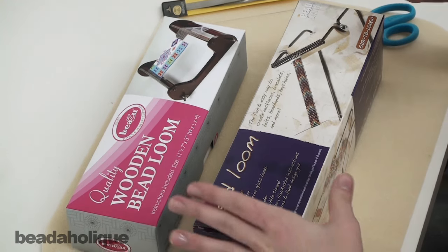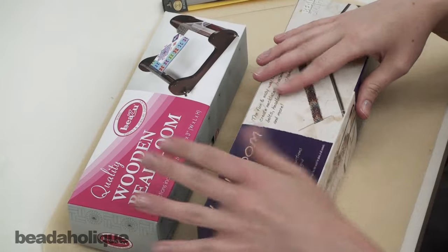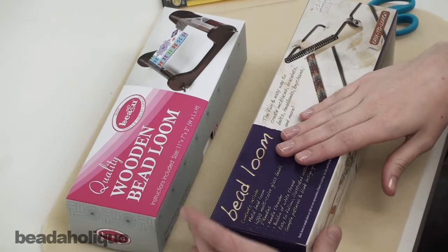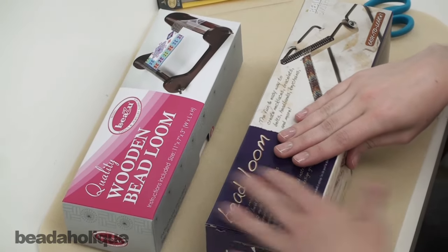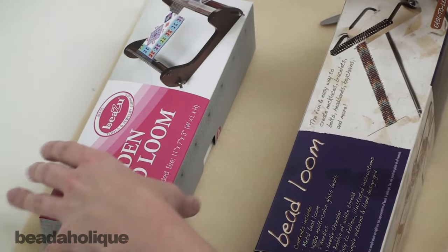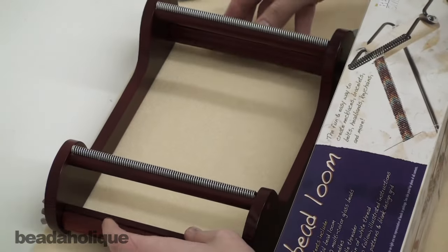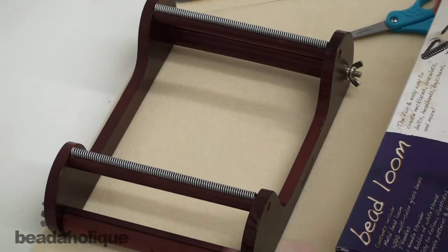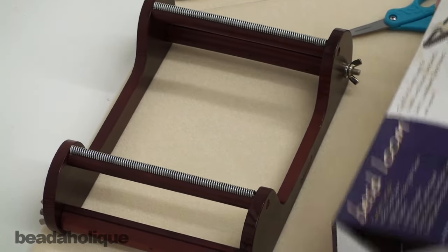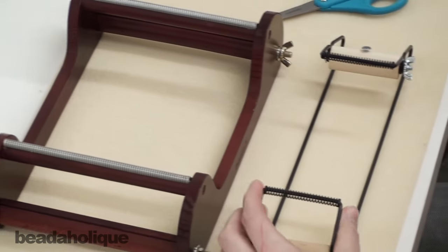We have two different options available for bead looms. We have this less expensive Beadsmith bead loom, and then we have this really nice wooden bead loom. Assembled, this is the wooden bead loom. You can see it's quite large, and the metal one is quite a bit smaller.